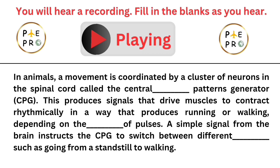In animals, movement is coordinated by a cluster of neurons in the spinal cord called the central pattern generator. This produces signals that drive muscles to contract rhythmically in a way that produces running or walking, depending on the pattern of pulses. A simple signal from the brain instructs the CPG to switch between different modes, such as going from a standstill to walking.